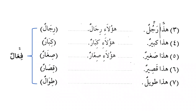If we say هؤلاء صغار, that is a complete sentence because the subject (هؤلاء) is definite and the predicate (صغار) is indefinite. But if we say هؤلاء الأطفال صغار, that means 'these children are young' — the children is the subject and young is the predicate, making it a full nominal sentence.